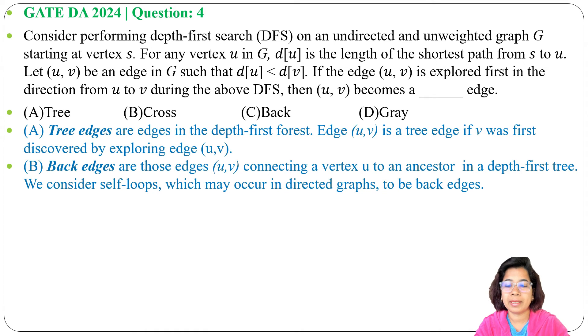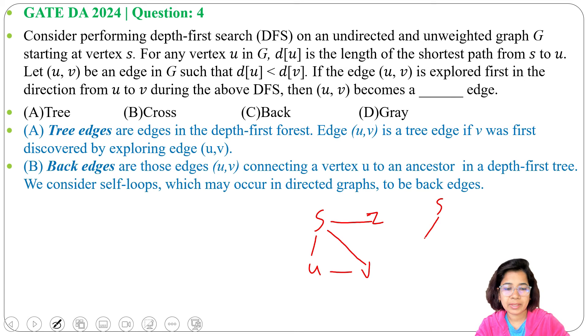Suppose we have a graph like this. Now from S we will visit U, from U we will visit V. Then from V, adjacent is S. S is already visited, so we will go back to U, then back to S, then from S we will visit Z. So here this edge V to S, this one is the back edge.